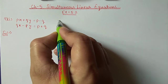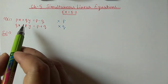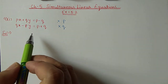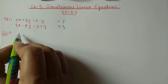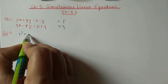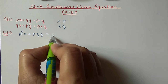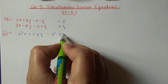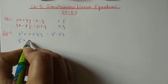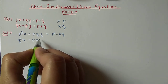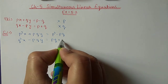the Y coefficient will become the same and we can eliminate Y. After multiplication it will become P squared X plus PQy equal to P squared minus PQ. The second equation, if we multiply with Q, it will become Q squared X minus PQy equal to PQ plus Q squared.